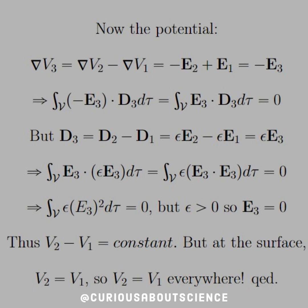So substitute that in, and we get the volume integral of negative E3 dot D3. The negative will cancel since it's all equal to 0.